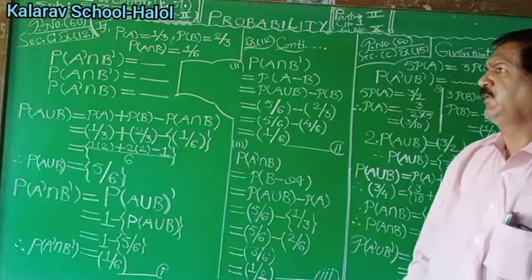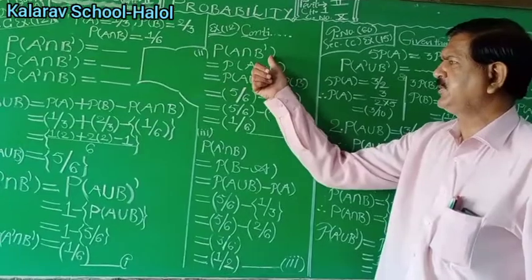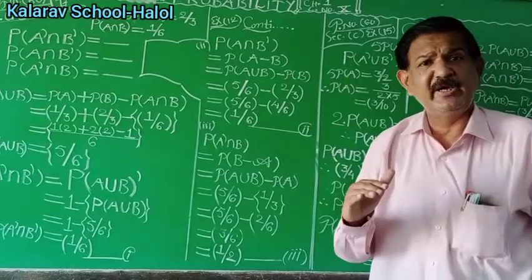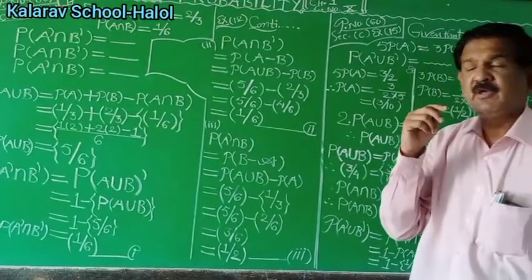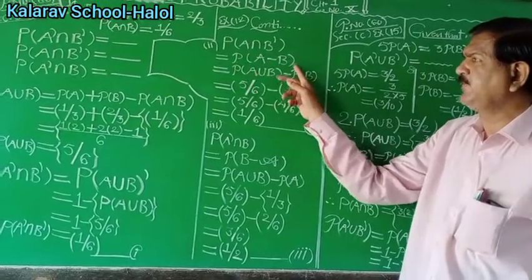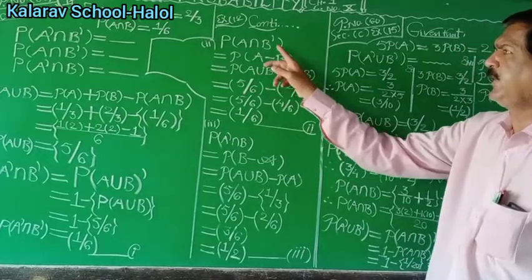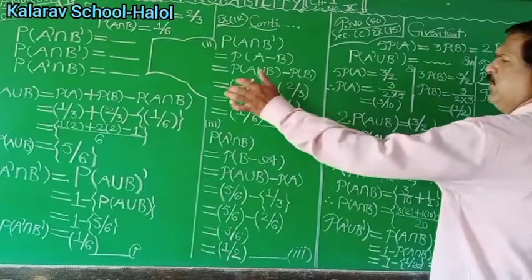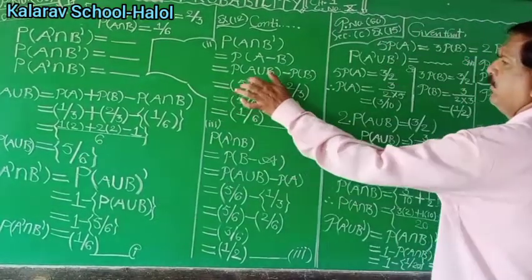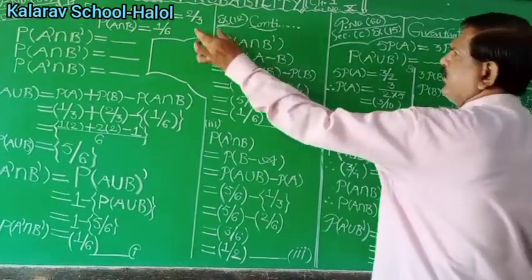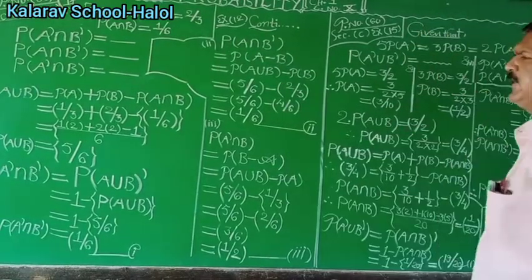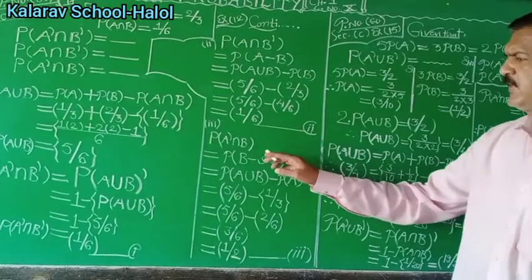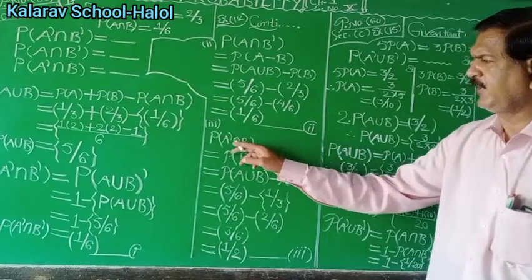Now for the second required probability: P(A intersection B complement) is the same as P(A minus B), which equals P(A union B) minus P(B). Substituting: P(A union B) is 5/6 and P(B) is 2/3. Taking LCM as 6: 5/6 minus 4/6 equals 1/6. So the answer is 1/6.